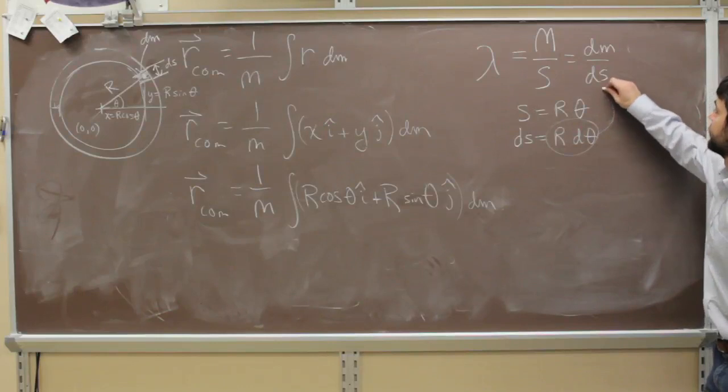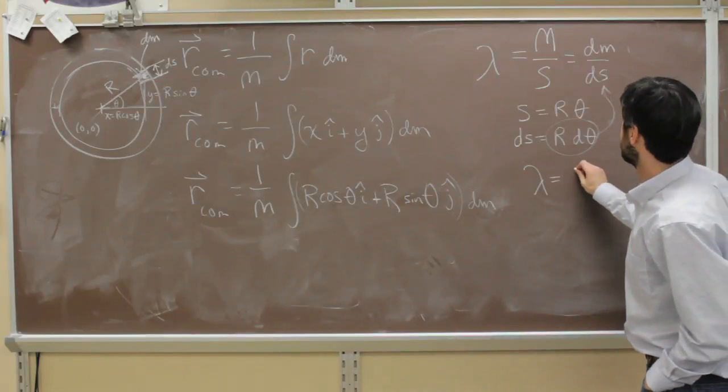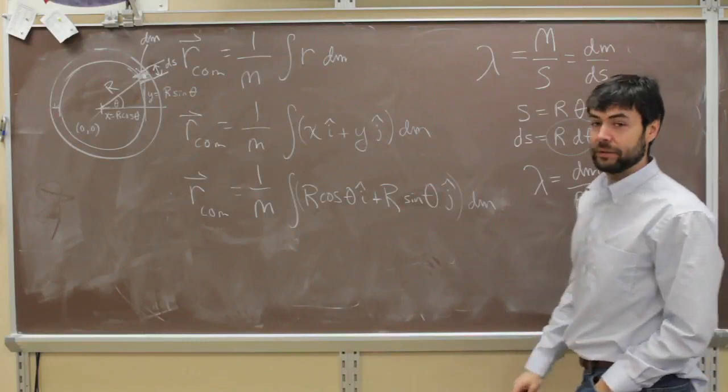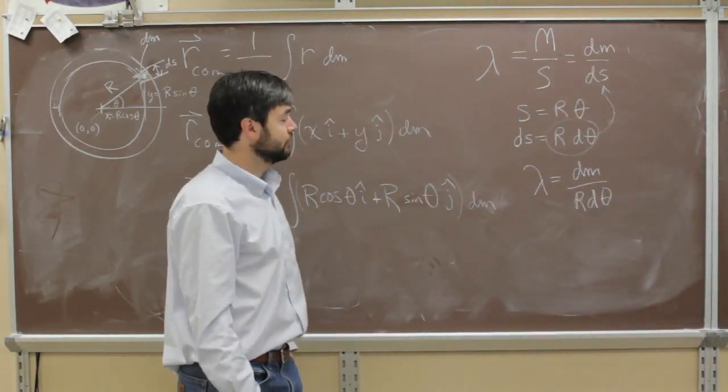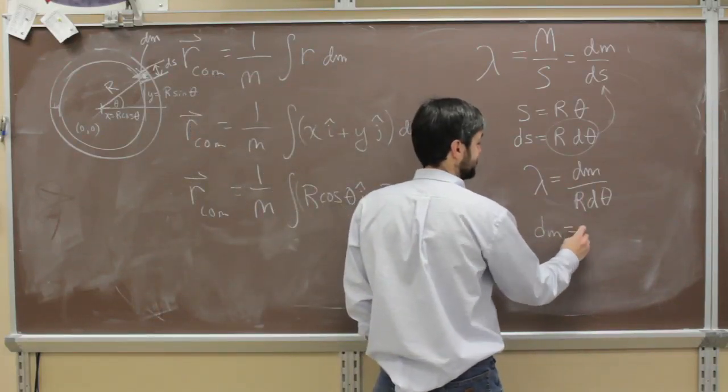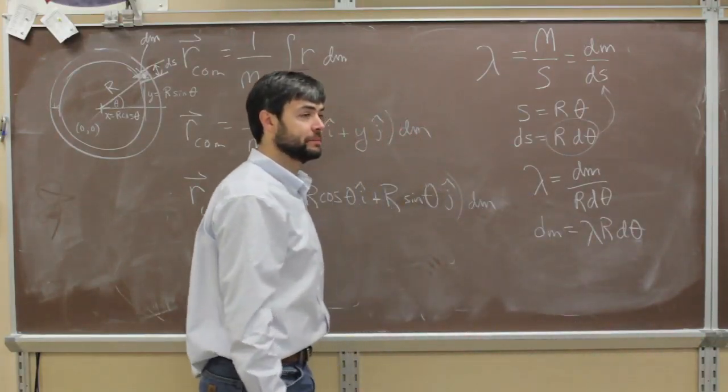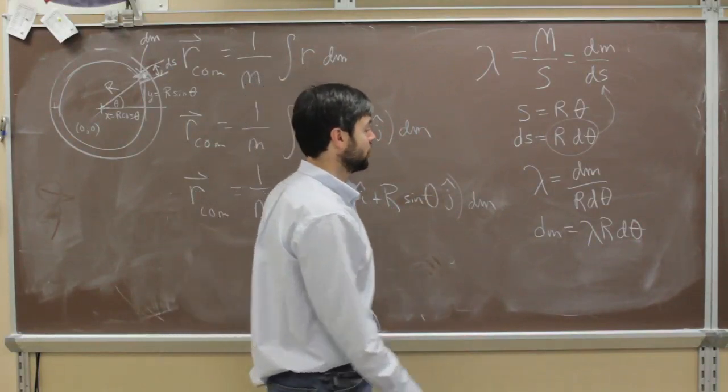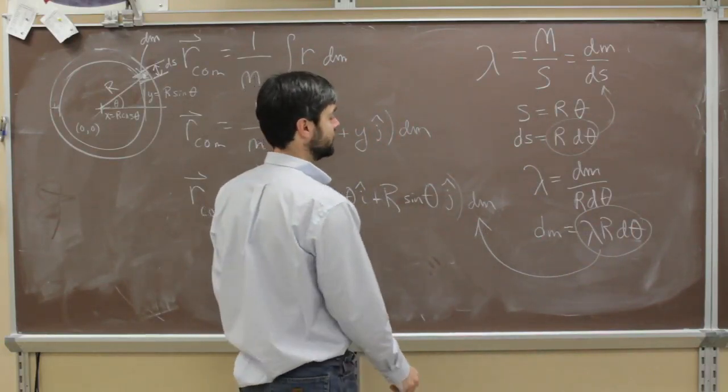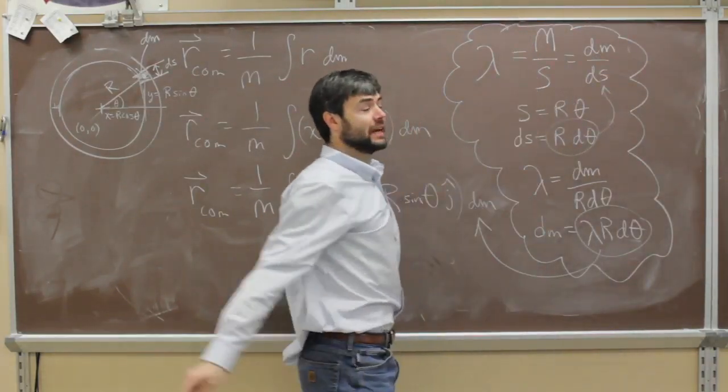Plug that in for ds. Yeah. We can plug that in for ds. So now we have lambda equals dm over r d theta. And what's dm then? Lambda r. Yeah, good. Lambda r d theta. And what are we going to do with that? We're going to put that in for dm. Okay. So let's see. All of this is a side step. So I'm going to put that inside a cloud.